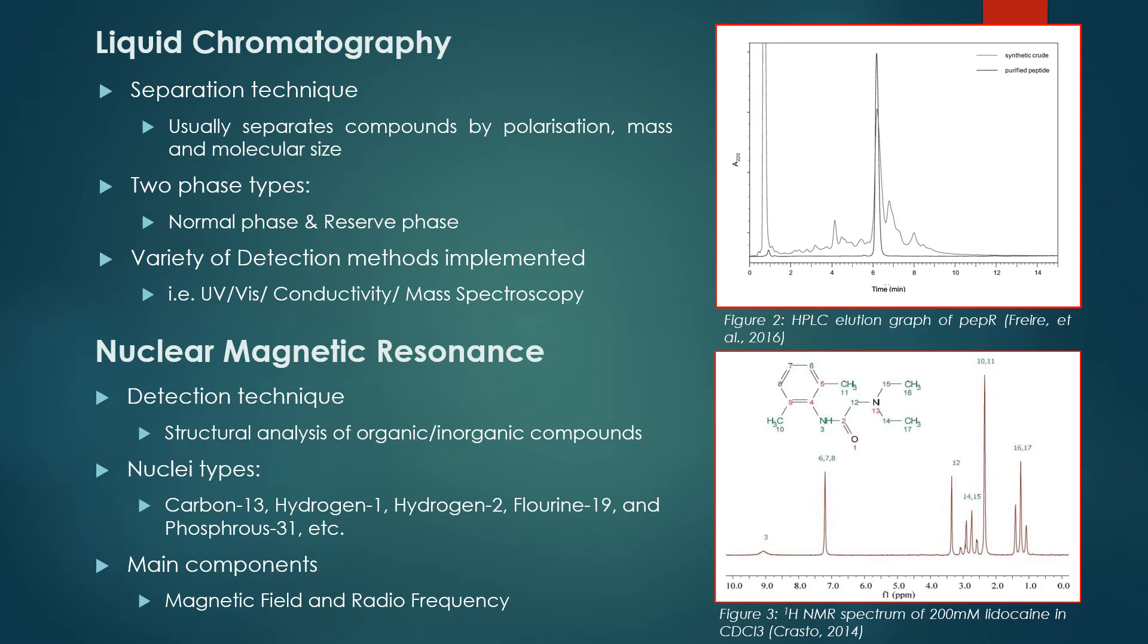After separation, different detection methods such as UV-vis, conductivity, and mass spectroscopy are used to detect eluted samples as they pass through the column.